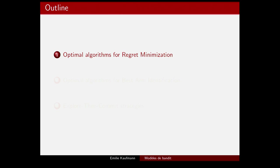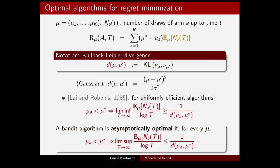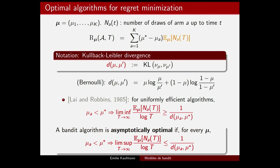Let me start with optimal algorithms for regret minimization, which are by now quite well known. The regret can be rephrased in terms of the expected number of draws of suboptimal arms. To have low regret, you want to draw suboptimal arms only a little. The Lai-Robbins result tells you that all arms should still be drawn infinitely many times, and gives a precise rate for the growth of these draws in terms of the Kullback-Leibler divergence D(mu, mu') between arm distributions. In the Gaussian case this is simply related to the squared gap between means; in the Bernoulli case it takes a slightly more complex but still explicit form.